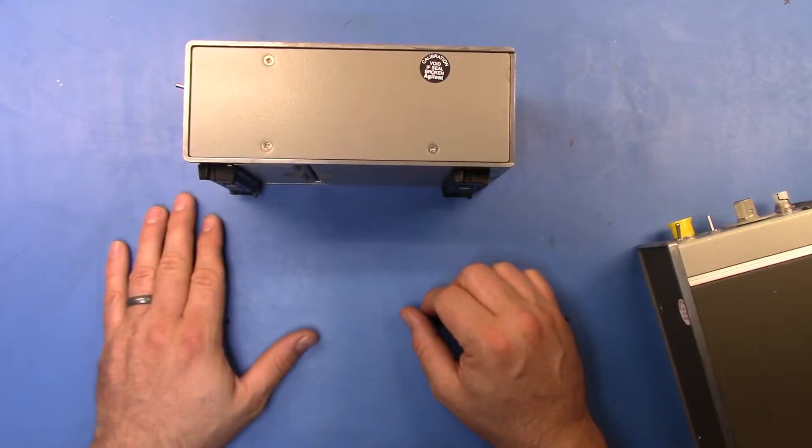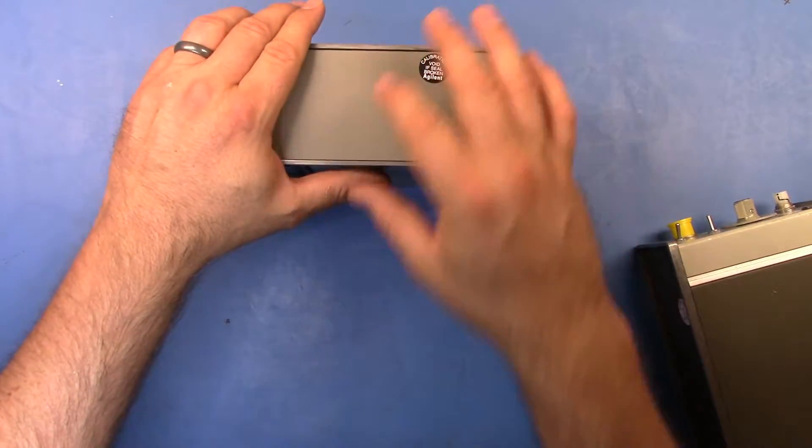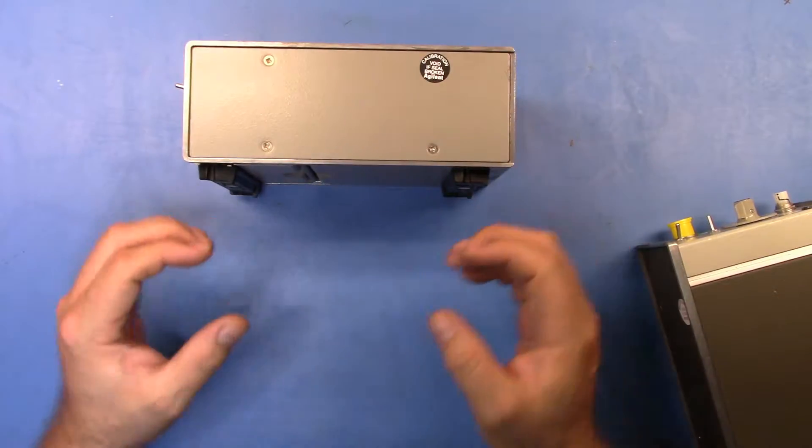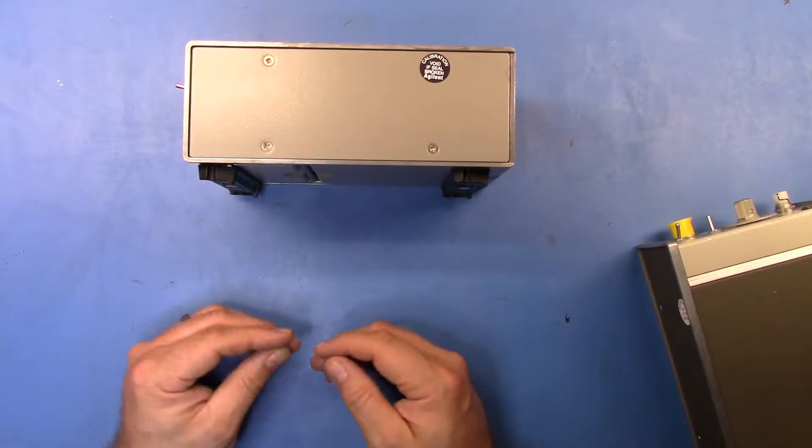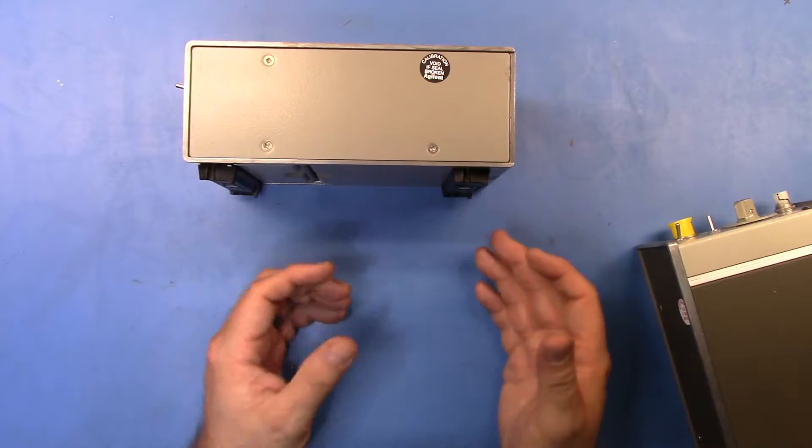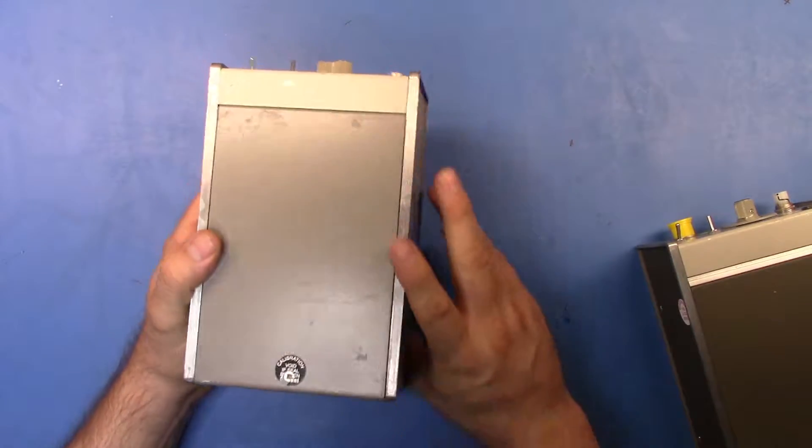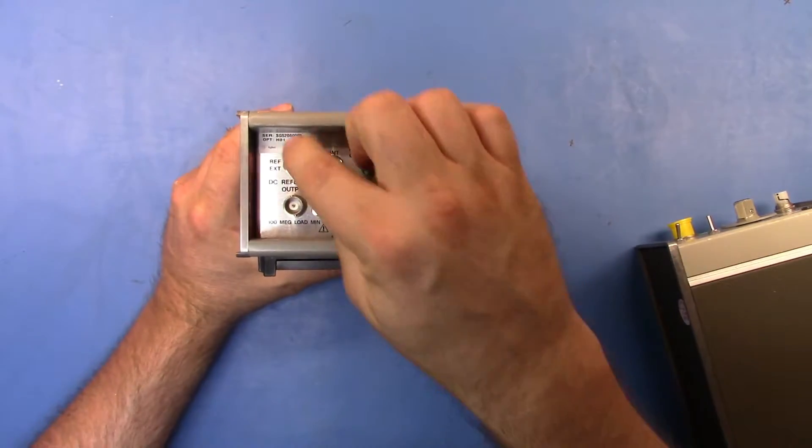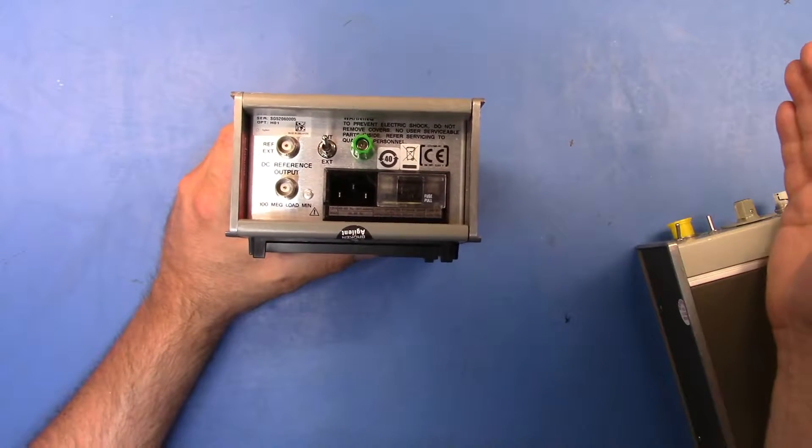That's great for calibrating the 435, 436, 437 meters. That's perfectly okay. When you start getting into the newer models, the EPM range, and in fact the meter that I bought just recently, which was the E4418B, that internal reference is no longer accurate enough.